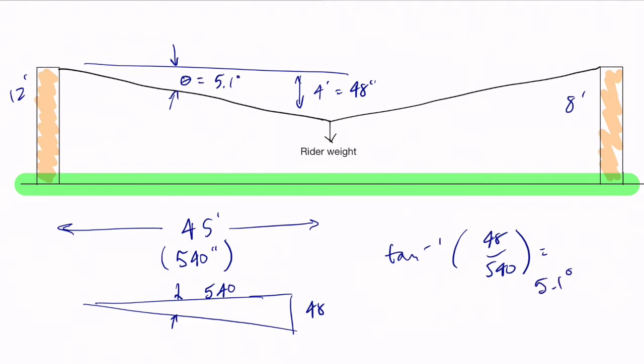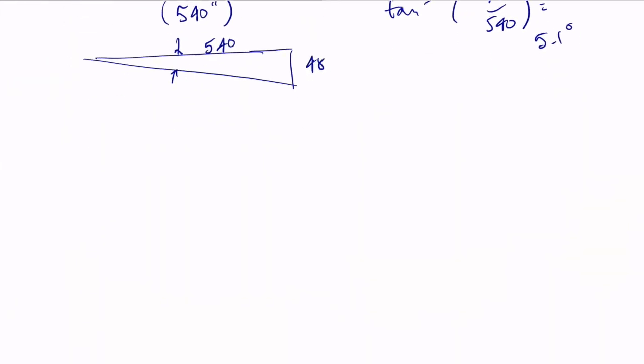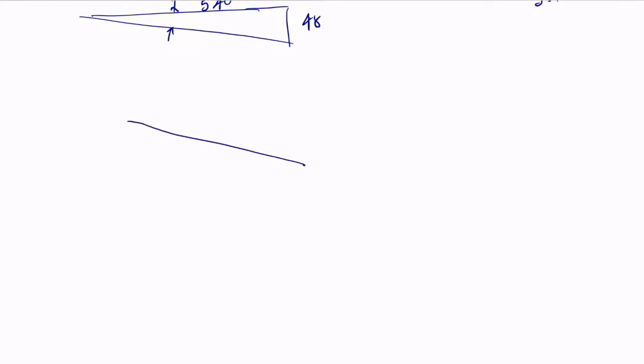So we've got a line that stretches like this. Let's say your kid weighs 100 pounds and you've got five degrees of angle here. You've got tension in this line, tension in this line. This is a force balance.